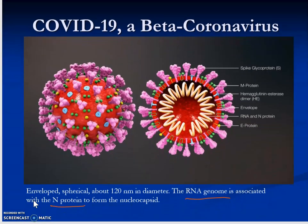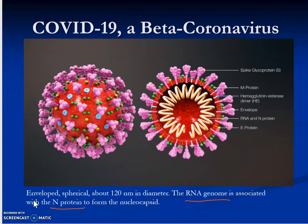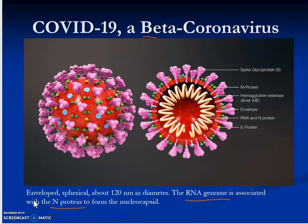COVID-19 is a beta coronavirus. The word 'corona' comes from the Latin word for crown — the virus has a crown surrounding its surface, which you can see here. It is an enveloped virus, spherical in shape, three-dimensional, and about 120 nanometers in diameter.